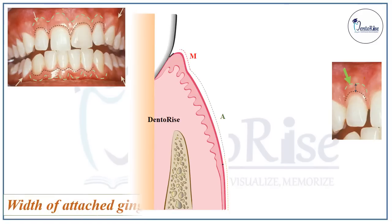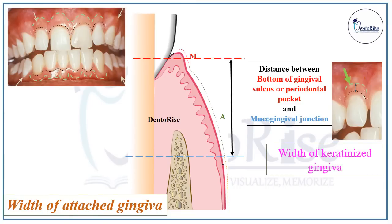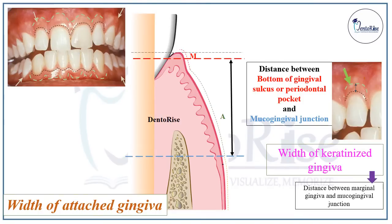The width of attached gingiva is very important from the clinical point of view. It is the distance between the bottom of the gingival sulcus or periodontal pocket — marked in the figure with a red dotted line — and the mucogingival junction — marked with a blue dotted line. The width of attached gingiva is very different from the width of keratinized gingiva. The width of keratinized gingiva is measured not from the gingival sulcus but from the tip of marginal gingiva up to the mucogingival junction, marked in the figure with a blue arrow.